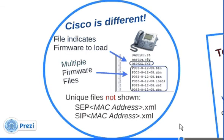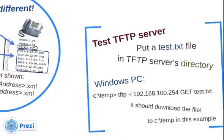For Cisco, unique files start with either SEP or SIP followed by the MAC address and .xml. Cisco has a whole bunch of different formats for this. Some other things you might find in a Cisco TFTP directory include a file called ringlist.xml, which is a list of all the ringtones you can download, with all the ringtone files also sitting in the TFTP directory. So Cisco's a little different, but the idea is the same — you're downloading files from your TFTP server.